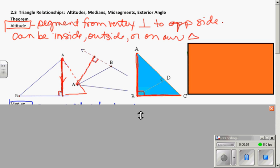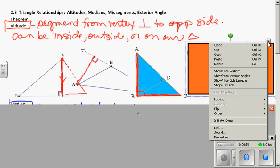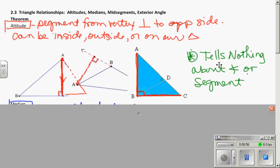Every triangle has three altitudes. One of the things that's unique, though, about altitudes is it tells us nothing about the angles or the segments. We don't know if the angle is bisected, if the segment is cut in half. All we get from altitude is right angle.